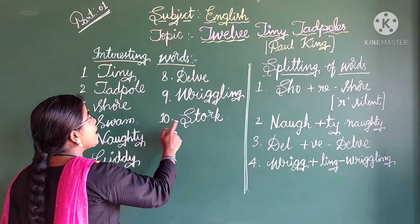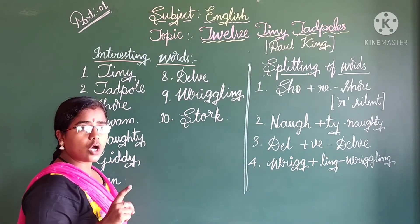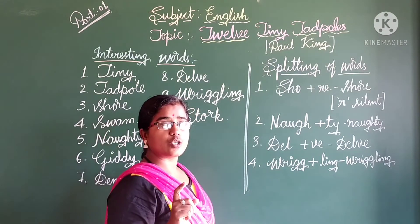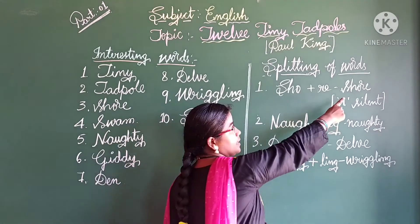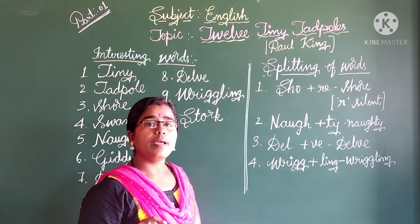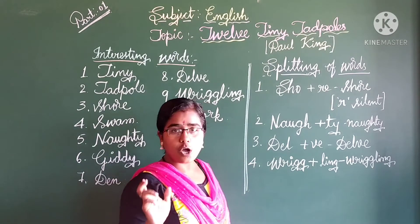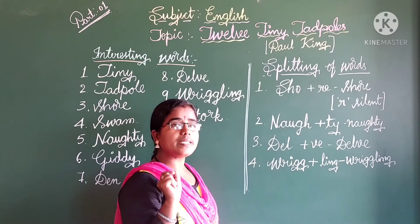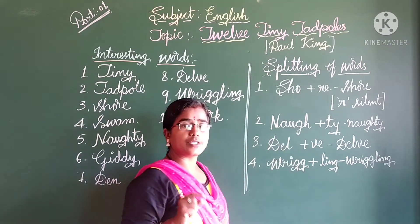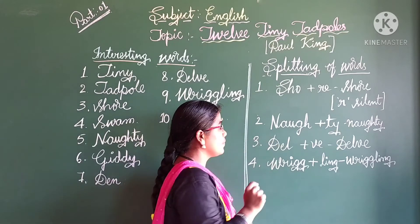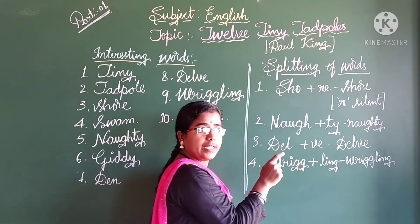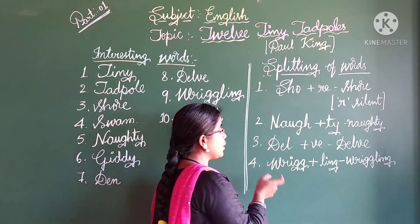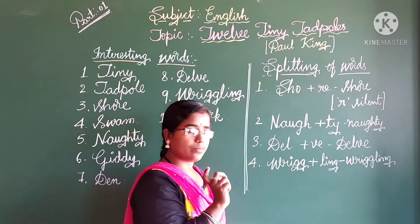Wriggling - W-R-I-G-G-L-I-N-G. Shore: how do you pronounce it? The R will be silent - you pronounce it 'shore.' Naughty - N-A-U-G-H-T-Y. Delve - D-E-L-V-E. And twelve - you pronounce it 'twelve.'